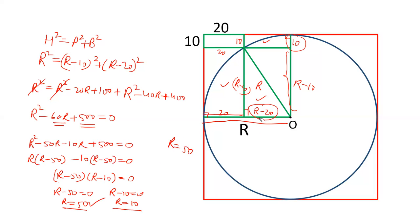And from the diagram you can check that if R is 50, so this line is 50, this radius is 50. This will be 40 and this will be 30. And 30, 40, 50 makes a Pythagoras triplet.